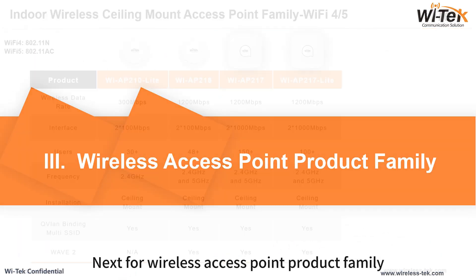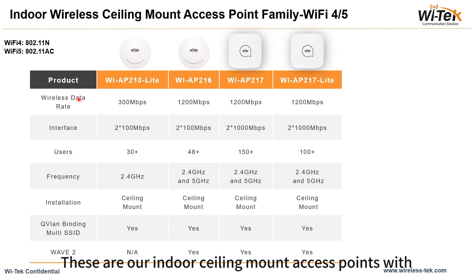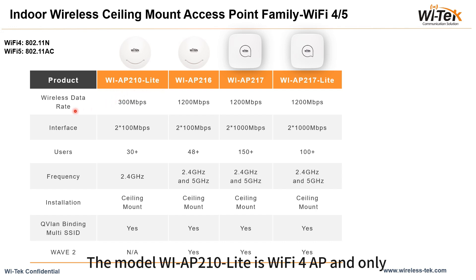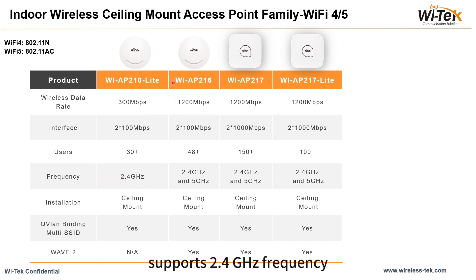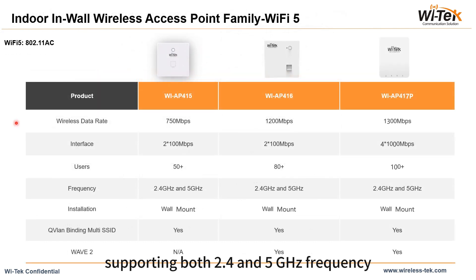Next, the wireless access point product family. These are our indoor ceiling mount access points with Wi-Fi 4 and Wi-Fi 5 standards. The model WI-AP 210 Lite is a Wi-Fi 4 AP and only supports 2.4 GHz frequency. The others are dual-band APs, supporting both 2.4 and 5 GHz frequency.